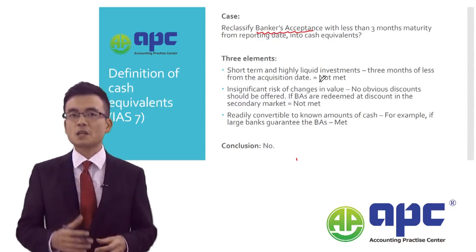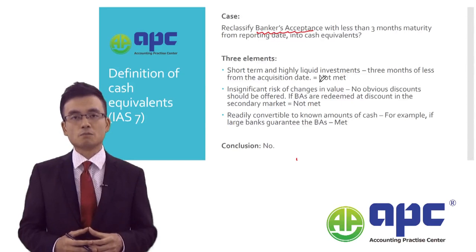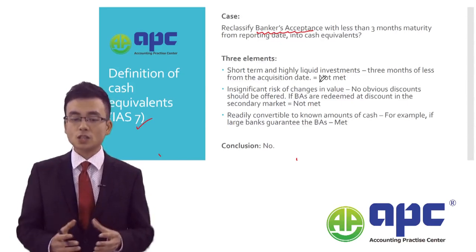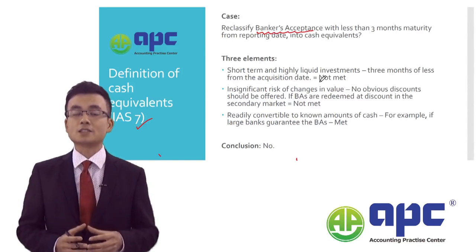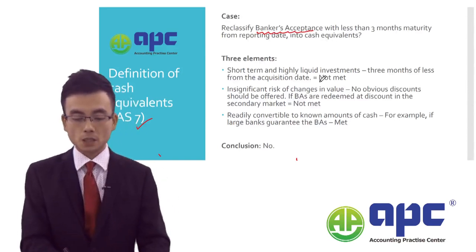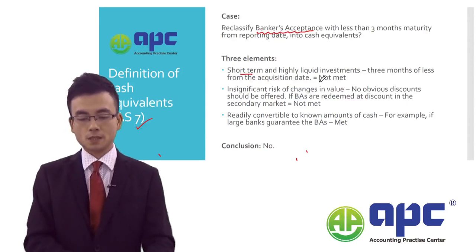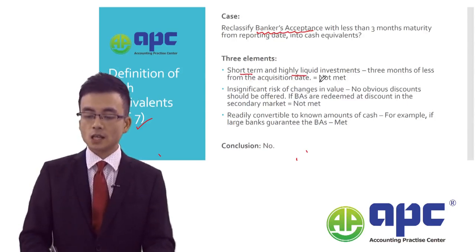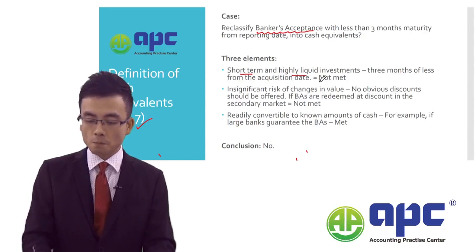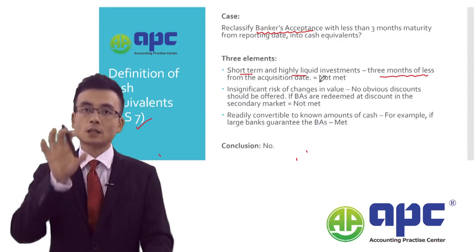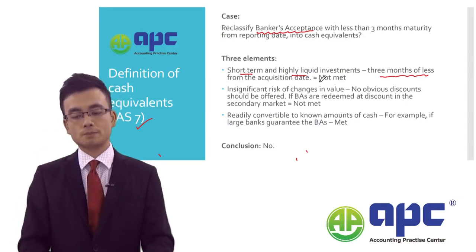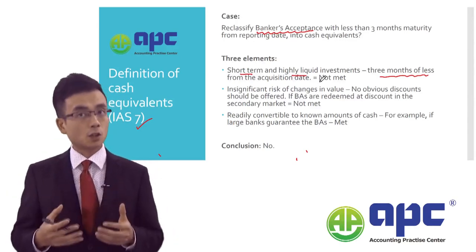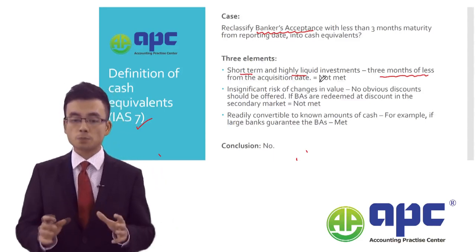To answer this question, we have to look at the definition of cash equivalents according to International Accounting Standard No. 7. According to IAS 7, to qualify as a cash equivalent, first it should be a short-term, highly liquid investment. 'Short-term' in IAS 7 means no more than three months from the date you acquire the instrument, and 'highly liquid' means it can be easily converted into cash — which banker's acceptance generally satisfies.